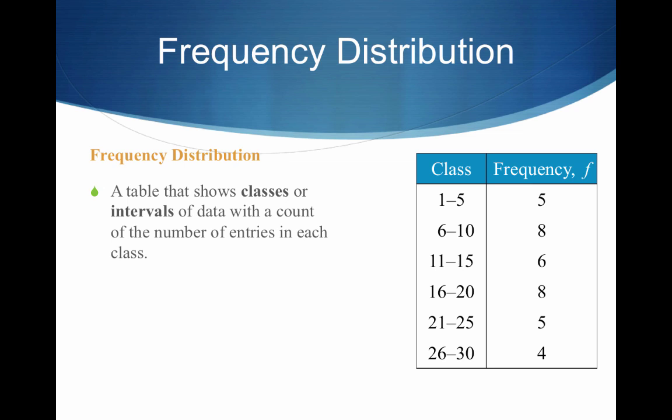For example, I could read this table on the right as: between 1 and 5 we have 5 entries, and between 6 and 10 we have 8 entries. So we're just tallying some data. The frequency of a class is the number of data entries in that class — so 5 is the frequency for the class 1 to 5, and 8 is the frequency for the class 6 to 10.